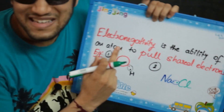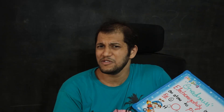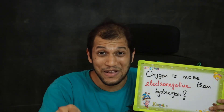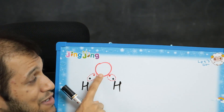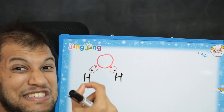So electronegativity is kind of like greediness. Now, atoms are always neutral — they always have an equal number of positive protons and negative electrons, making them neutral. But in a water molecule, because the electrons spend more time towards oxygen, oxygen gets access to two extra electrons. Therefore, oxygen gets extra negative charge — we put a minus-two extra charge on oxygen. And because hydrogen has lost one electron each, we put a positive charge on hydrogen.